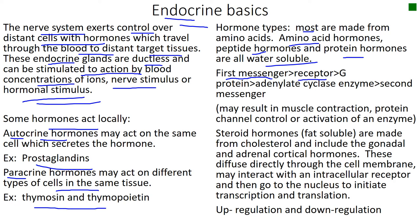They interact with a receptor on the cell surface. Usually a G protein is triggered, then an enzyme is triggered, and a second messenger may carry the message to result in muscle contraction, protein channel control, or activation of an enzyme in that cell — perhaps to be anabolic, building something up, or catabolic, to break something down.